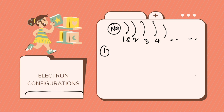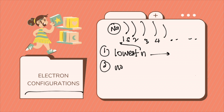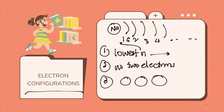Number one: electrons fill the orbital starting from the lowest energy level, which is 1, and moving forward. Number two: no two electrons can fill up one shell. And number three: for degenerate orbitals, electrons first fill each orbital singly — they fill up singly first, and then come back to fill the second electron. This is according to Hund's rule.